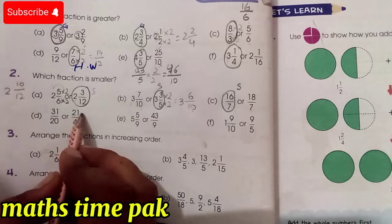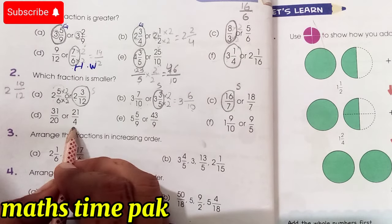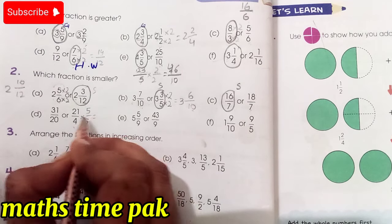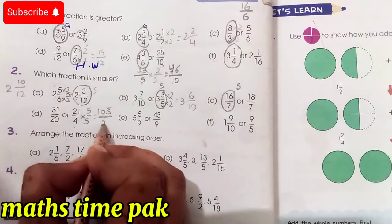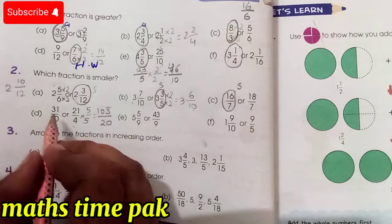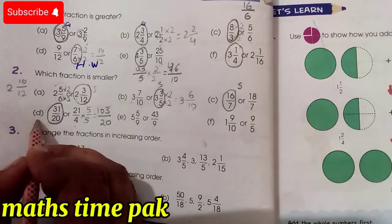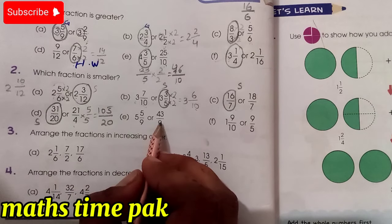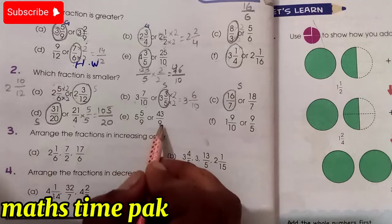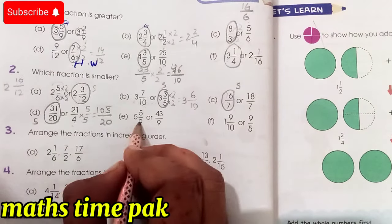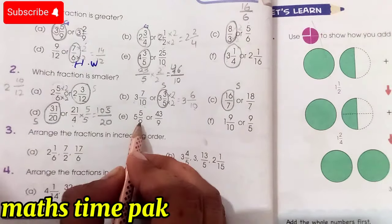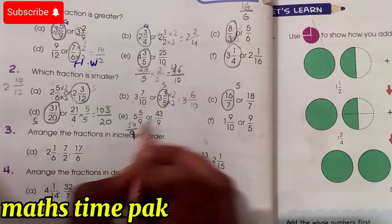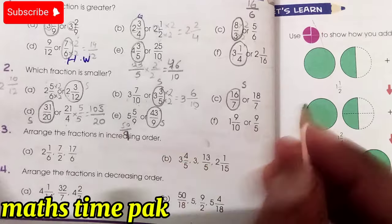Part D has 31/20 and 21/4. Denominators differ, so multiply 21/4 by 5/5 to get 105/20. Comparing 31/20 and 105/20: 31 is smaller, so 31/20 is our smaller value. Part E has 5 5/9 and 43/9. Converting 5 5/9 to a fraction: 9×5=45, plus 5 = 50/9. Comparing 43/9 and 50/9: 43 is smaller, so 43/9 is our smaller value.